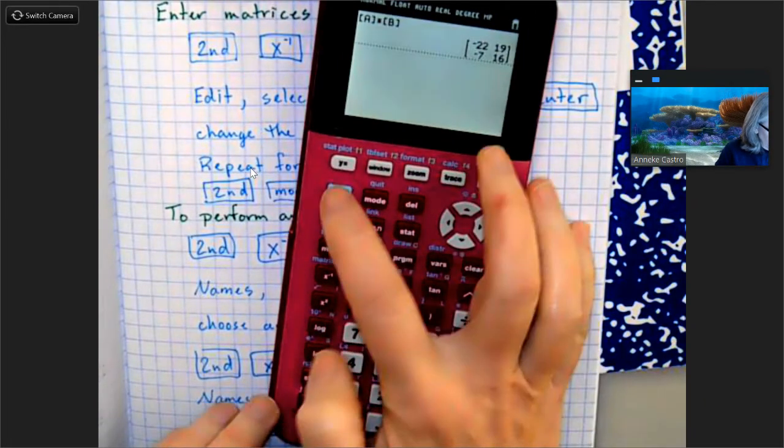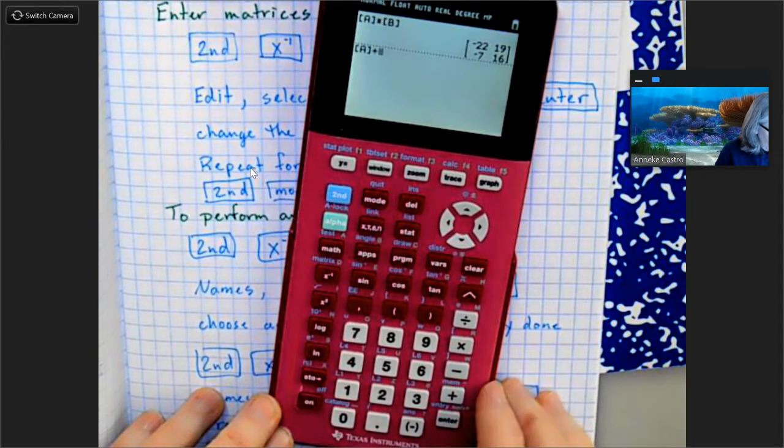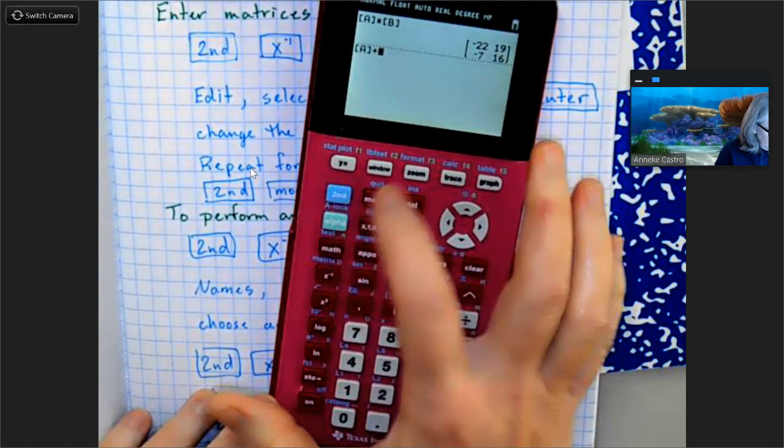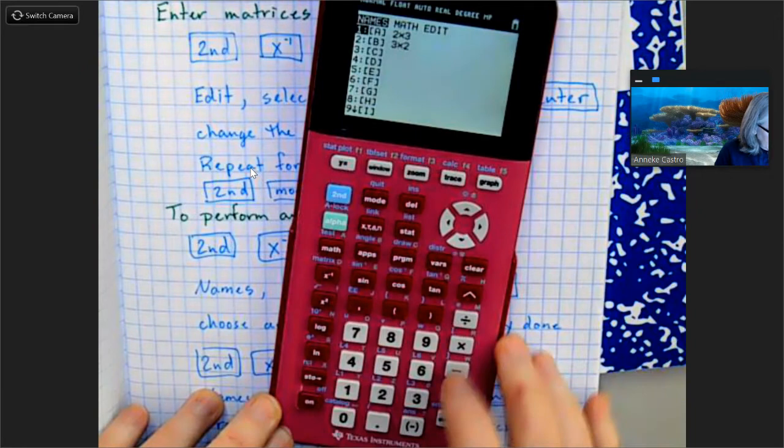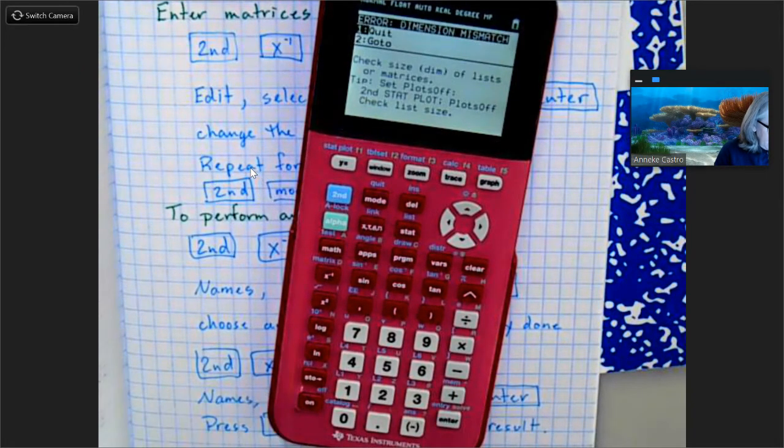If I do A plus B, it should give me an error, right? So I'm going to select A plus B, and look, says I can't do it. As I expected, because the matrices are not the same size.